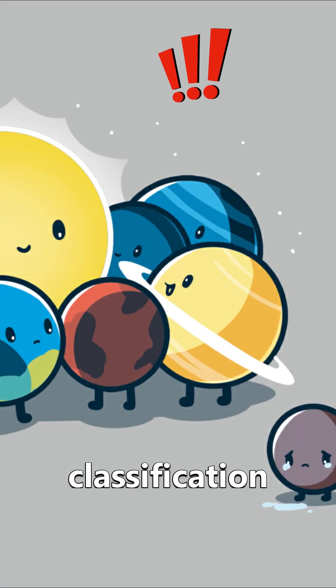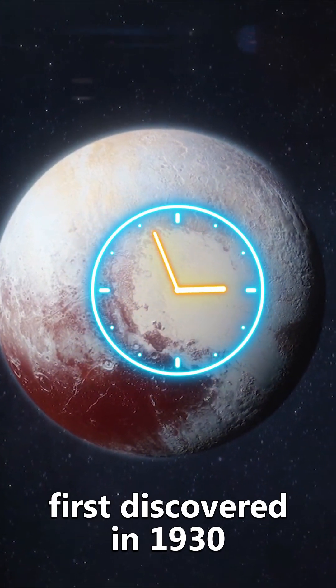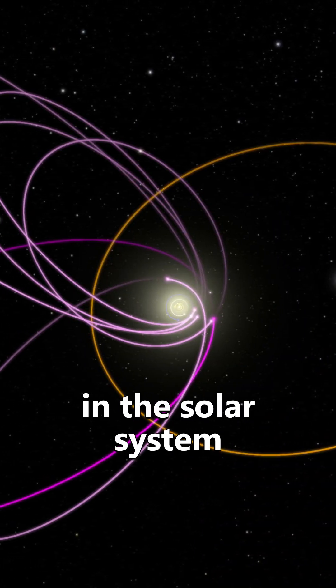It all comes down to classification. When Pluto was first discovered in 1930, it was classified as the ninth planet in the solar system.